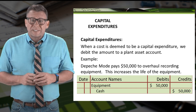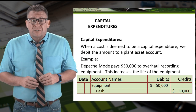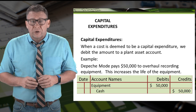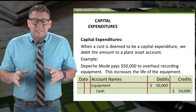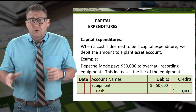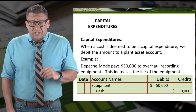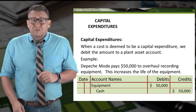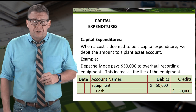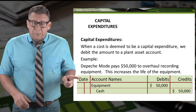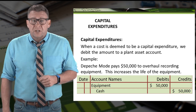Here's a simple example. Depeche Mode pays $50,000 to overhaul recording equipment, and the overhaul increases the life of the recording equipment. Since it increases the useful life, the cost is a capital expenditure. Therefore, we debit equipment and credit cash for $50,000.